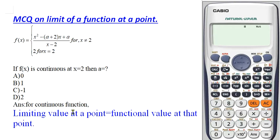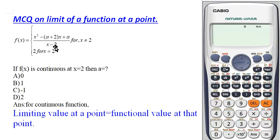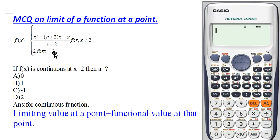For the function to be continuous, the limiting value should equal the functional value at that point. Here the point is x = 2, and at that point the functional value is 2. Since it is given that the function is already continuous, the limiting value should also be exactly 2 at x = 2.